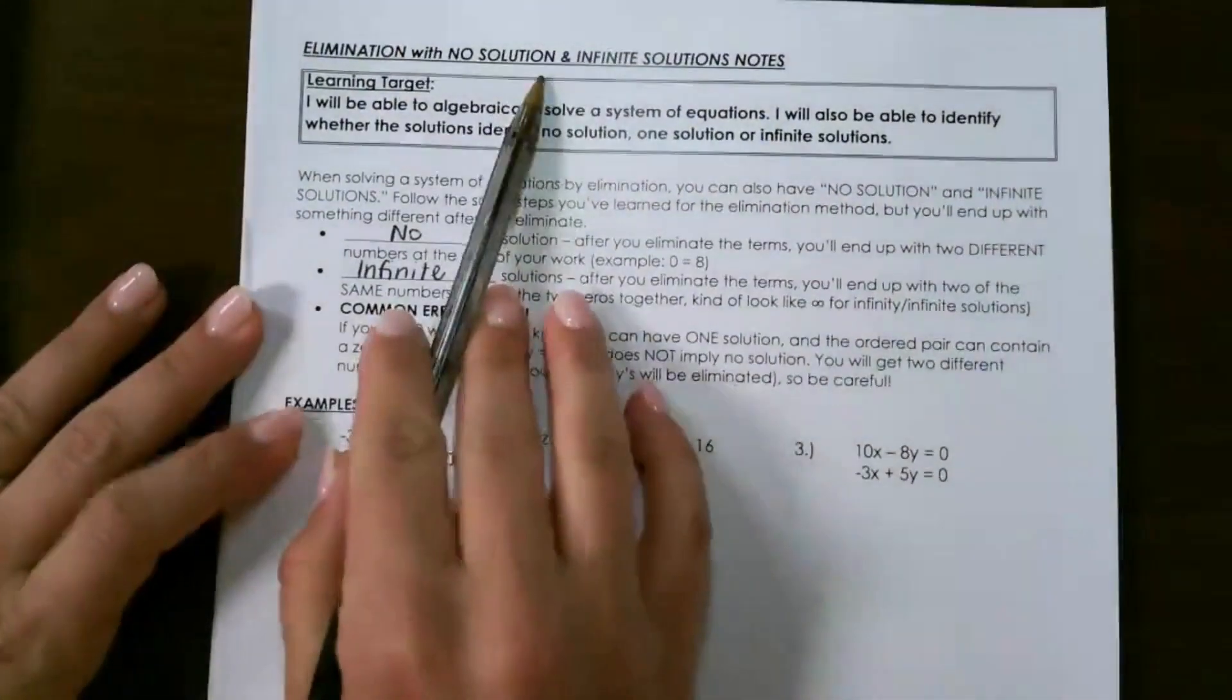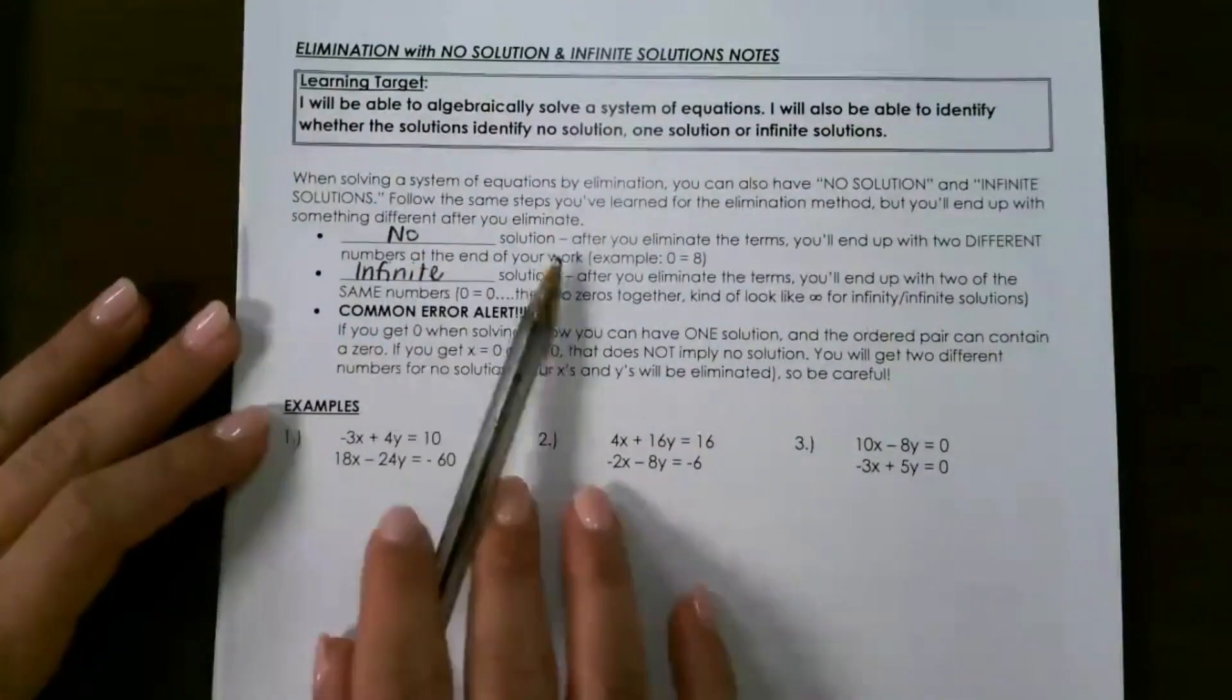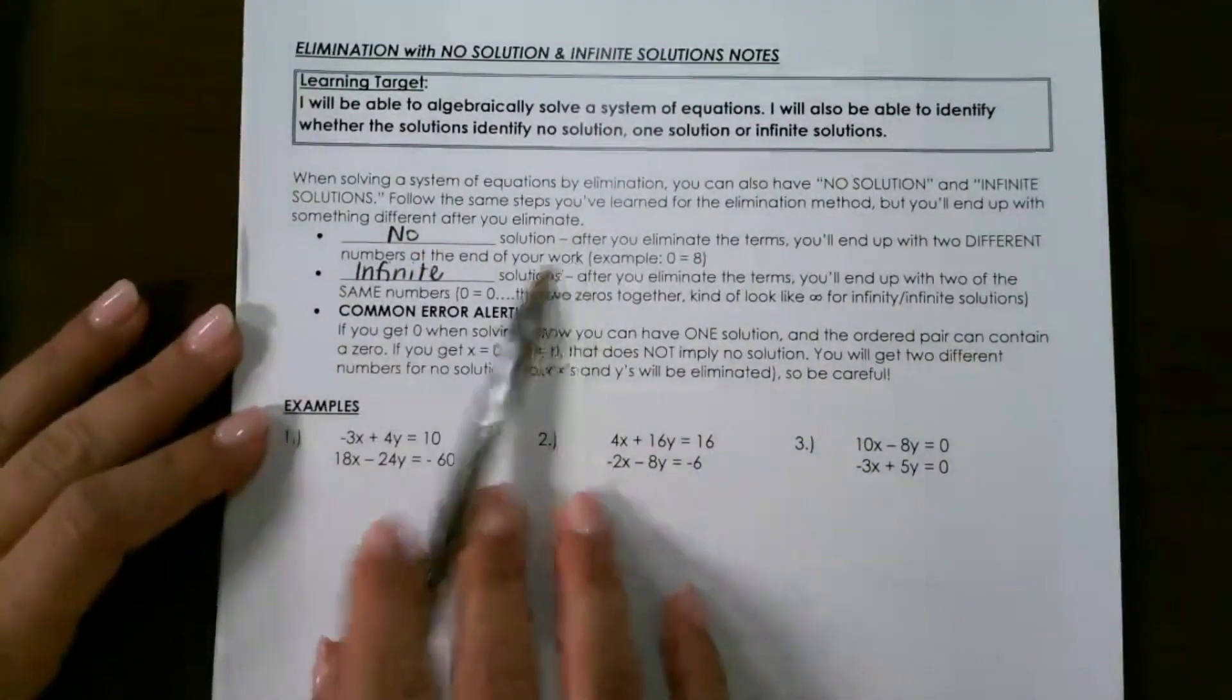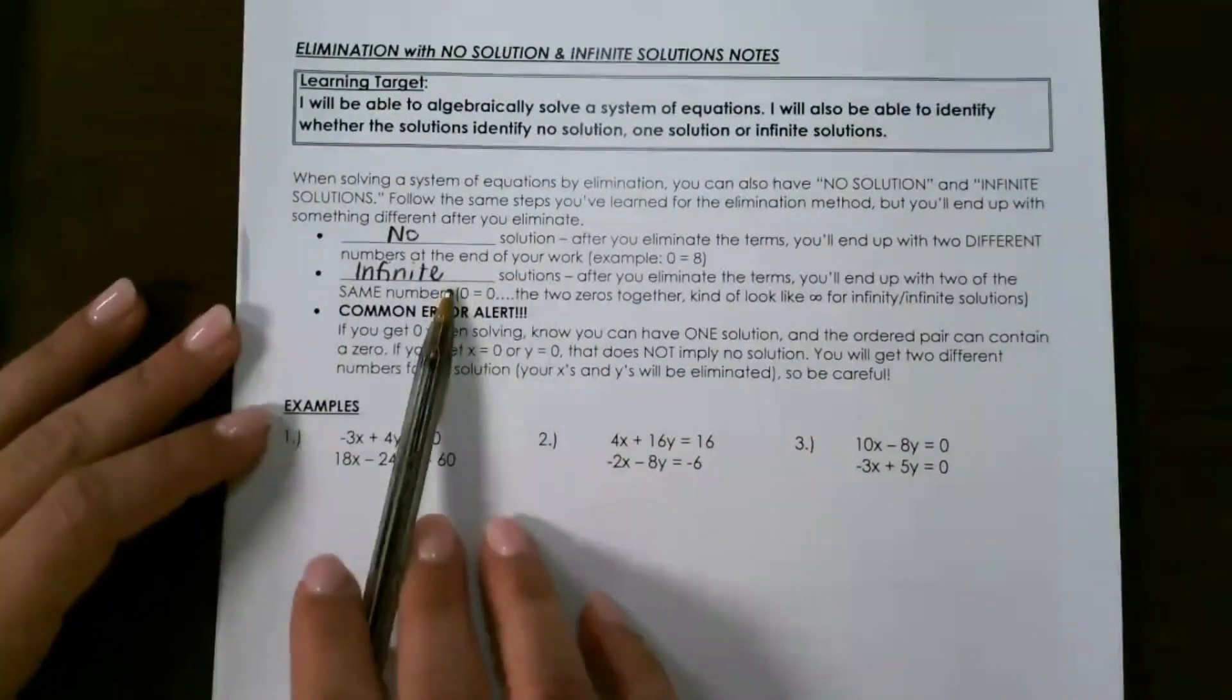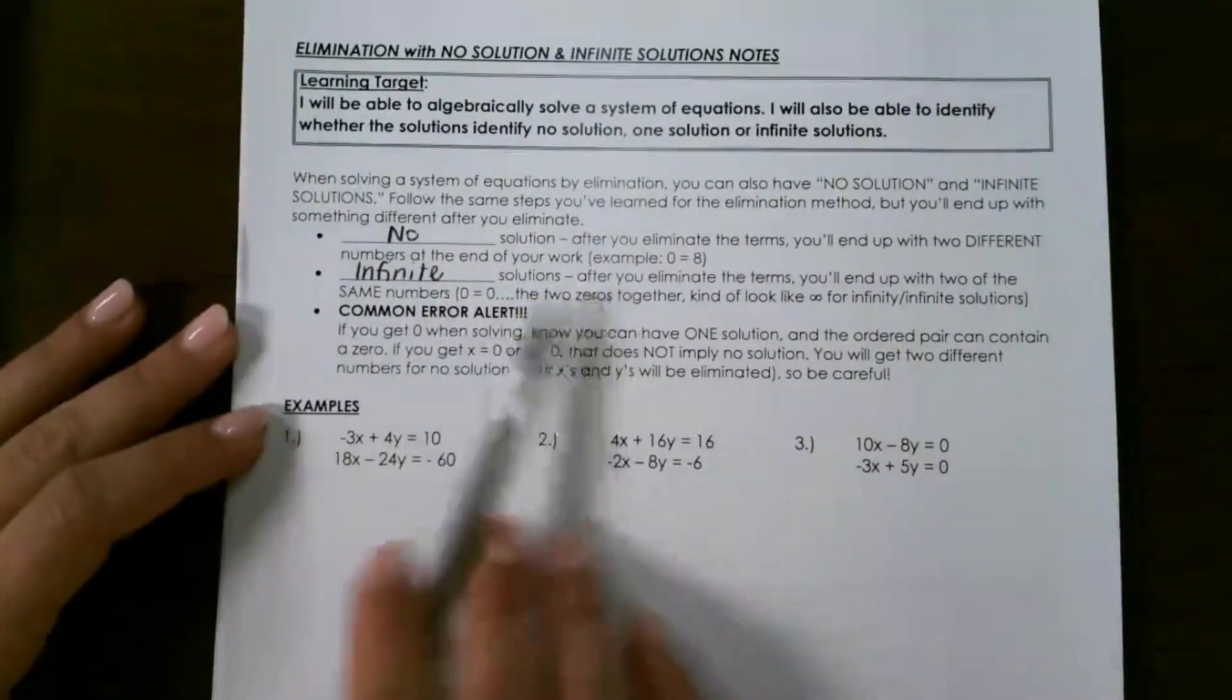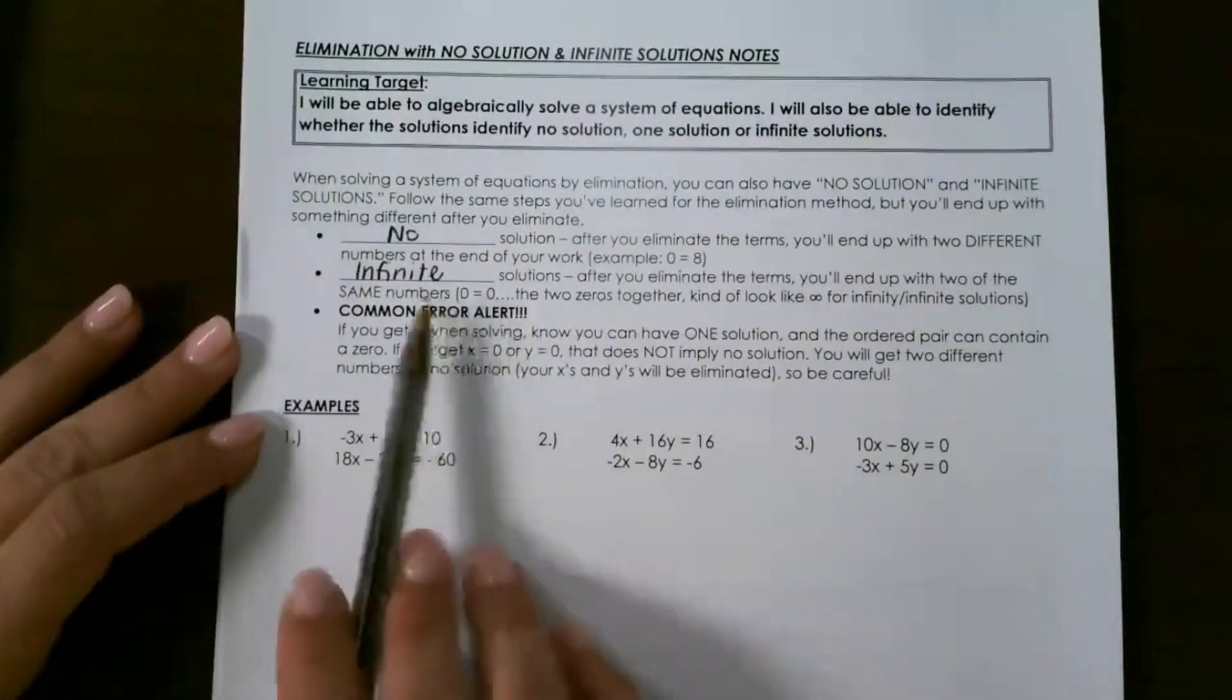Let's look at elimination when we have no solution or infinite solutions. No solution is when you eliminate the terms and you'll end up with two different numbers at the end of your work. Infinite solutions is when you solve and eliminate and the two numbers are 0 equals 0 or they're the same number.